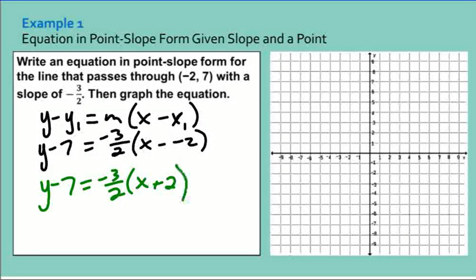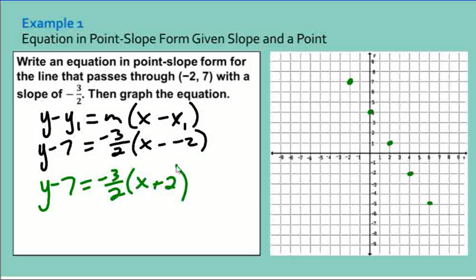Now we just need to graph what we have. Our point is negative 2, 7 — going negative 2 across and up to 7 gives us the point the line passes through. Then using the slope, I go down 3 to the right 2, and down 3 more to the right 2. You need at least 2 points, but the more you plot, the clearer the line. Drawing the line through the points gives us the graph for the equation.